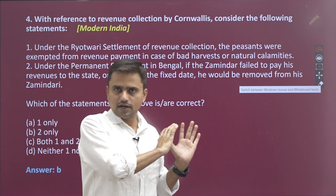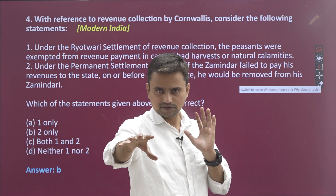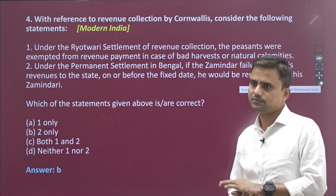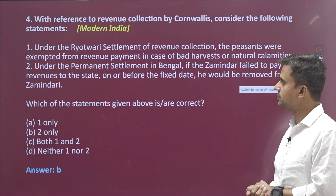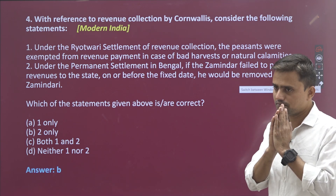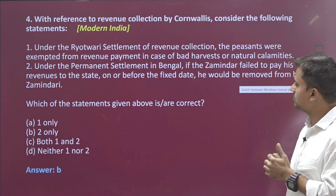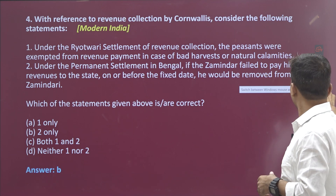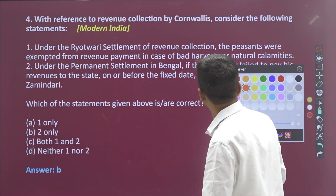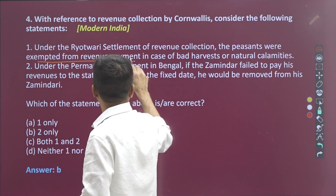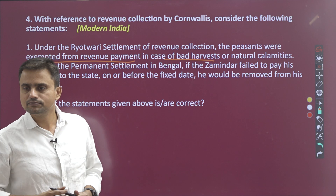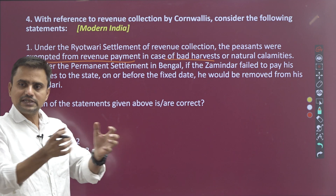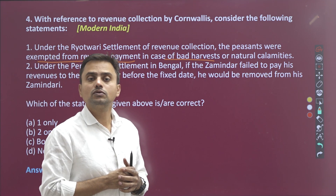You have to understand the logic behind this — if you understand the logic, this question is not a big deal and you can comfortably answer it. They wanted certainty of revenue. Under the ryotwari settlement, peasants directly pay the land revenue. Peasants were exempted from land revenue in case of bad harvest. The purpose of introduction of these systems is certainty.